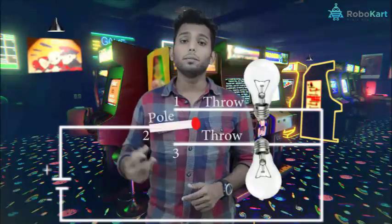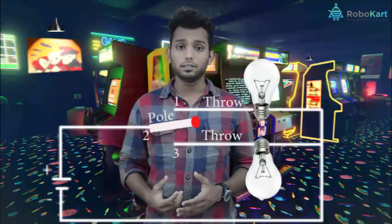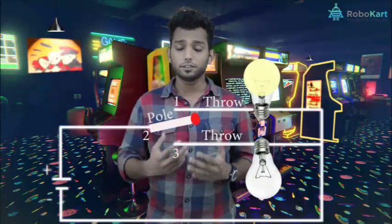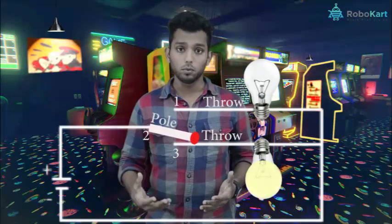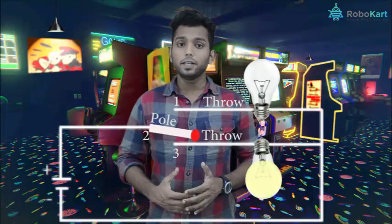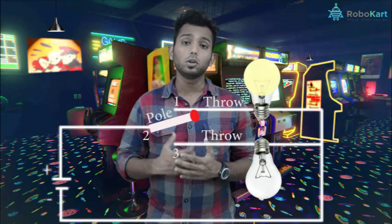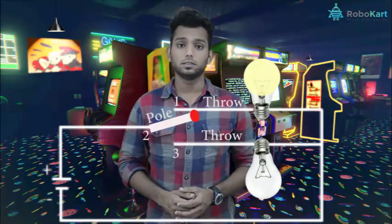The SPDT switch has three terminals: one terminal is an input and two terminals are output, so it can control two circuits. The name itself says Single Pole Double Throw. The main application of the SPDT switch is to control the light from both locations.